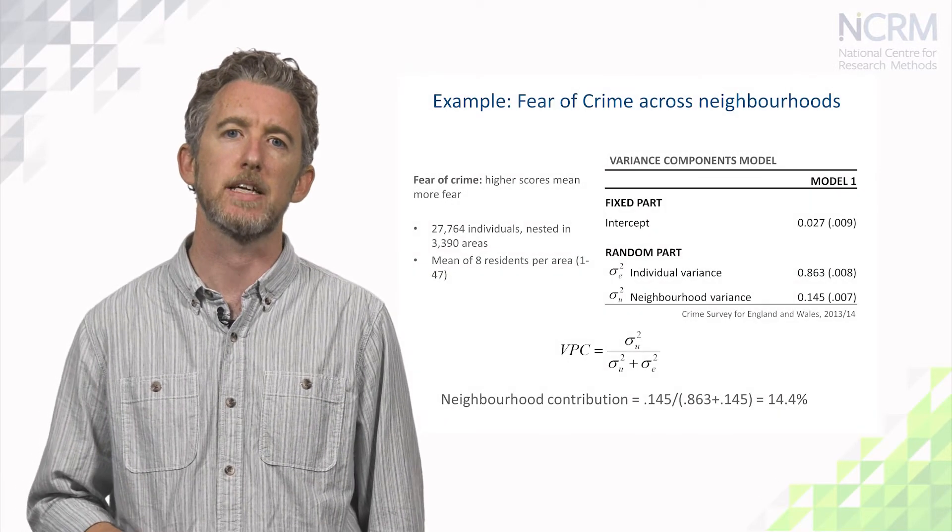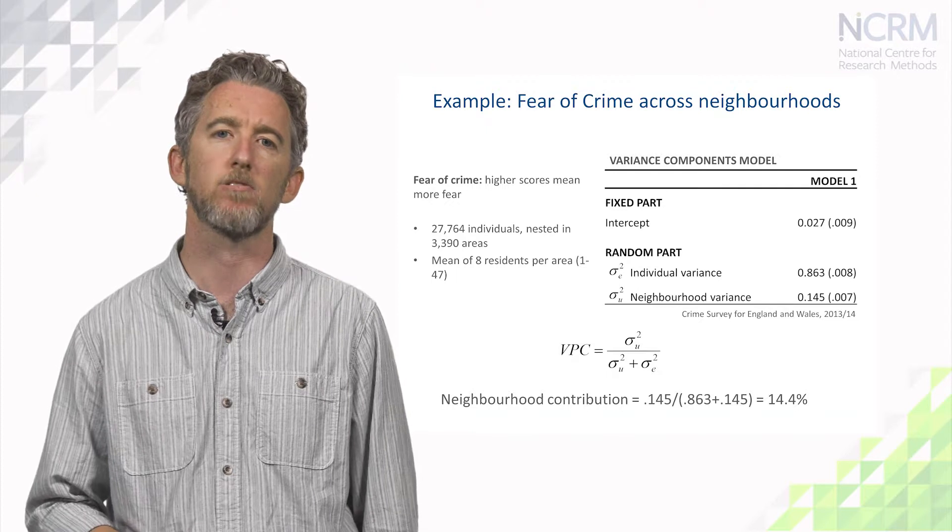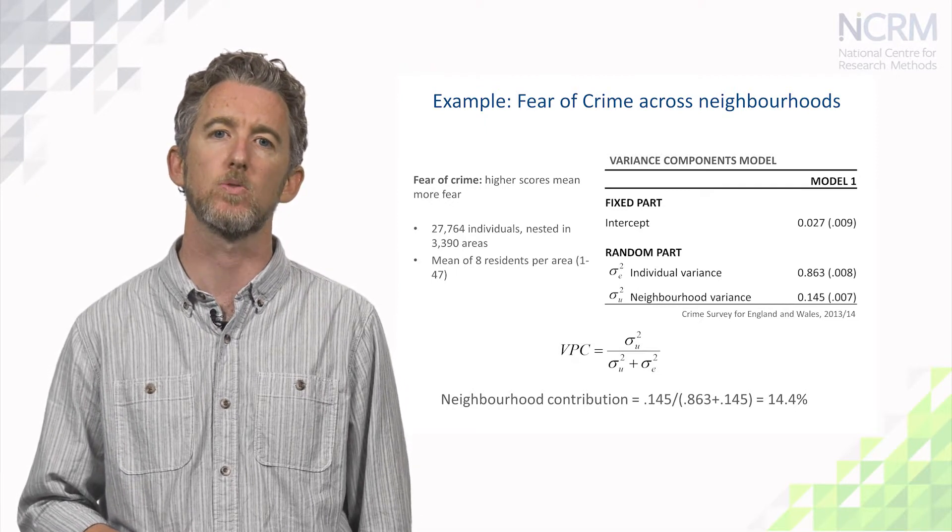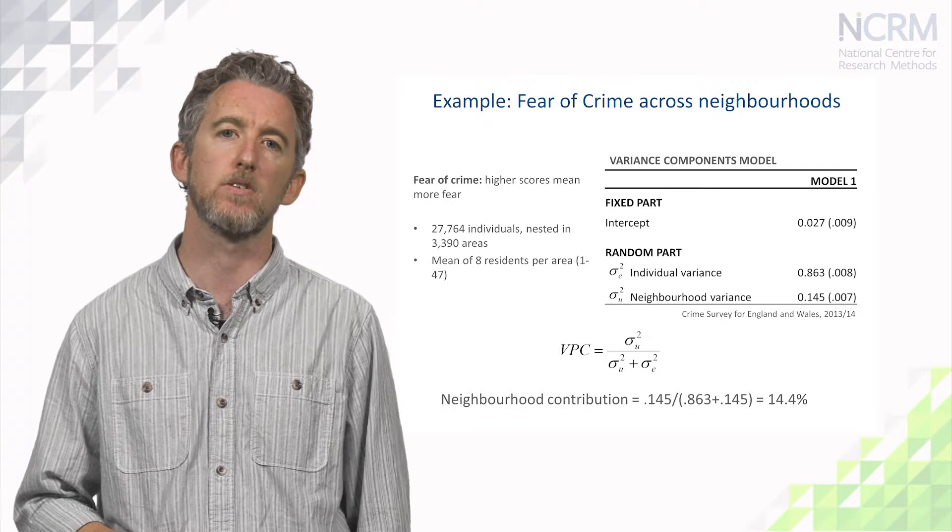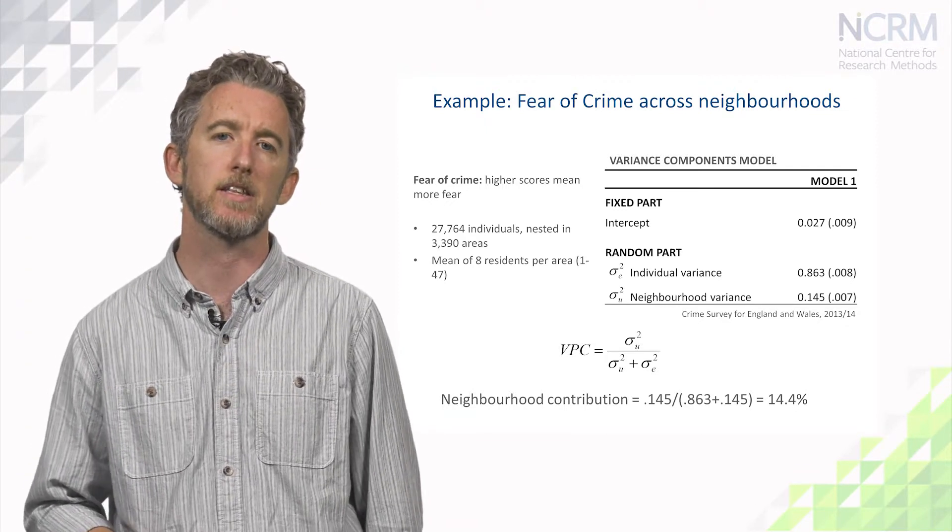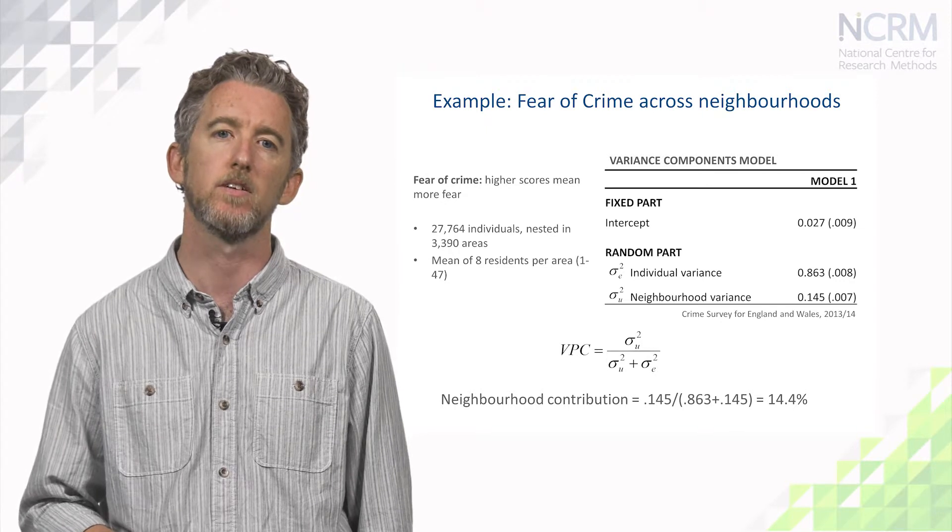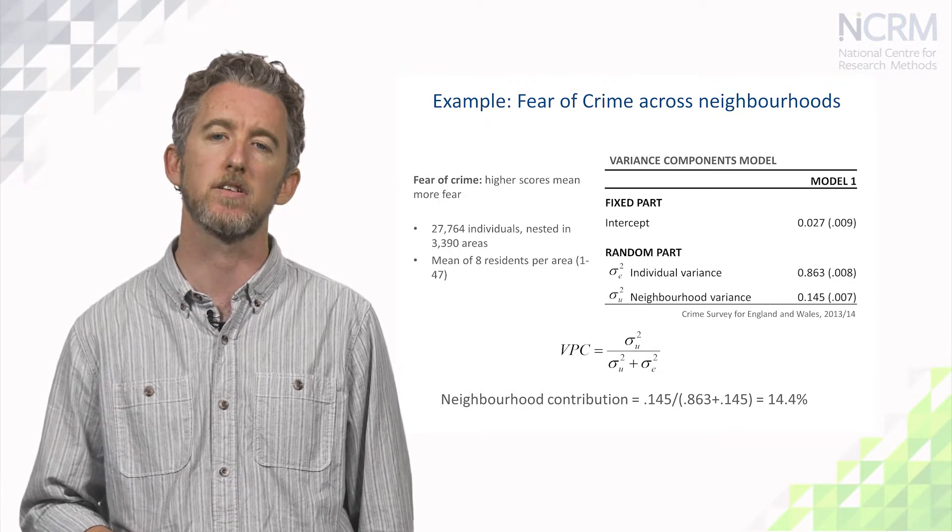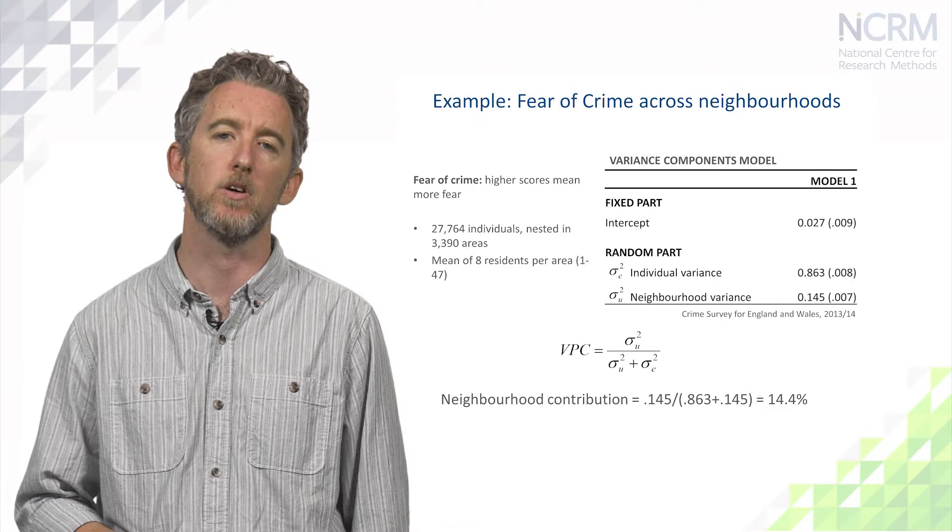Turning to some real data, here we have measurements of fear of crime, which is a standardised scale where higher scores mean more fear, for a total of 27,764 residents that live in 3,390 areas of England. There are an average of 8 residents in each area, with a maximum of 47.